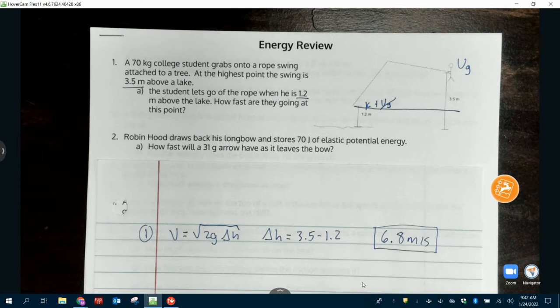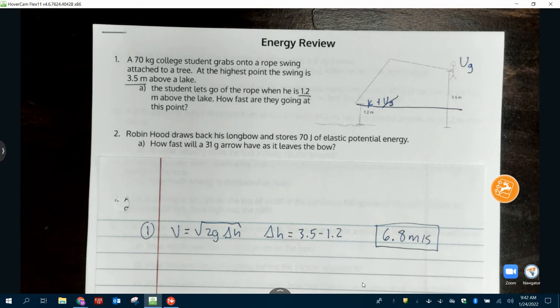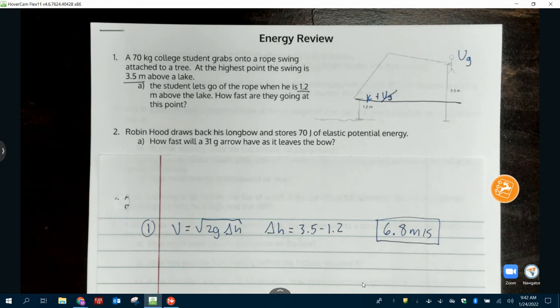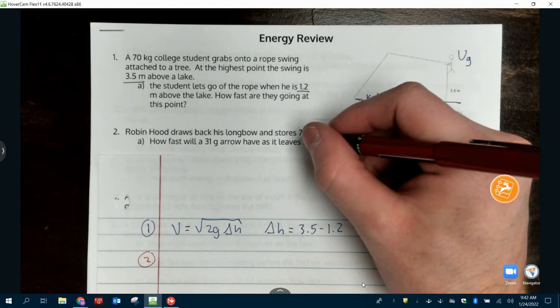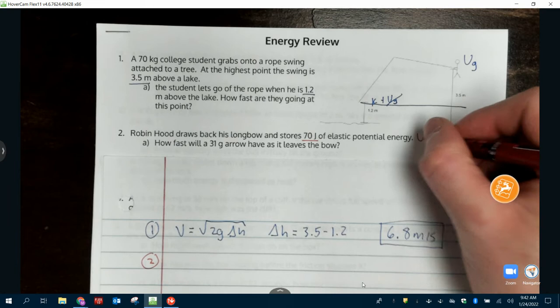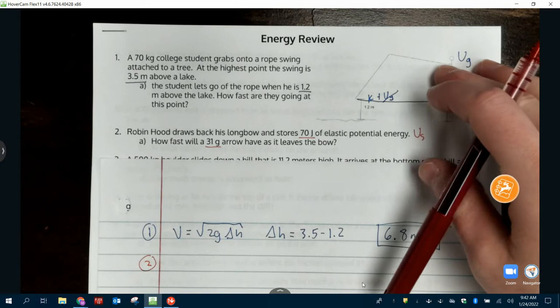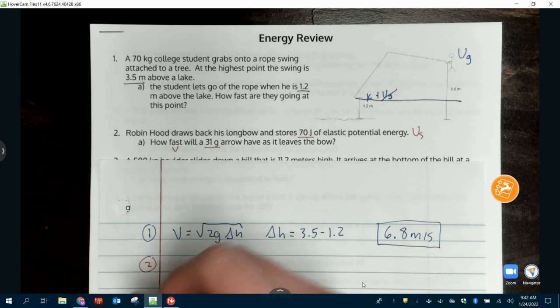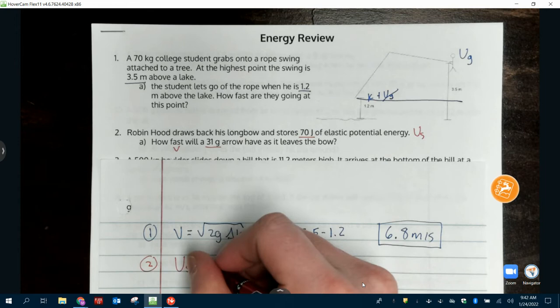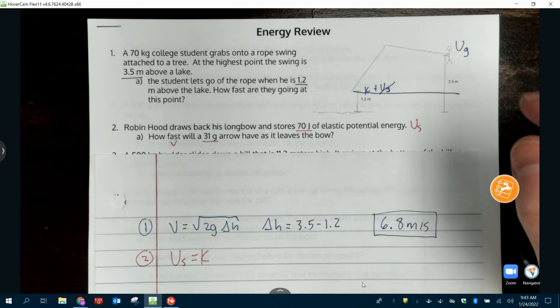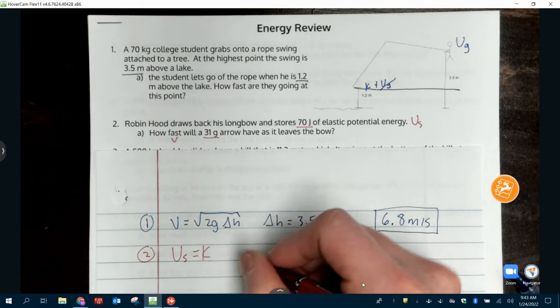Number two. Robin Hood draws back his longbow and stores 70 joules of elastic potential energy. If it says elastic potential that's really the same thing as spring potential. How fast will a 31 gram arrow have as it leaves the bow? How fast? That means we need velocity but what type of energy is it? Kinetic. So we've got where's that kinetic coming from? It's coming from the spring. So Us equals K.